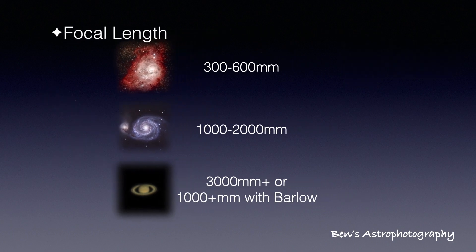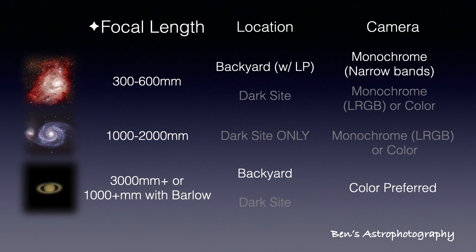By the way, your target also affects the selection of your camera and how you shoot them. If you live close to a city and have a backyard, doing narrowband astrophotography for nebulae is a good choice, which means you must have a monochrome camera, and then you can do astrophotography for almost every single clear night. But for galaxies, you have no choice but to do LRGB or use a color camera and go to dark sites. Planets are the most flexible — you can do it anywhere with any camera.